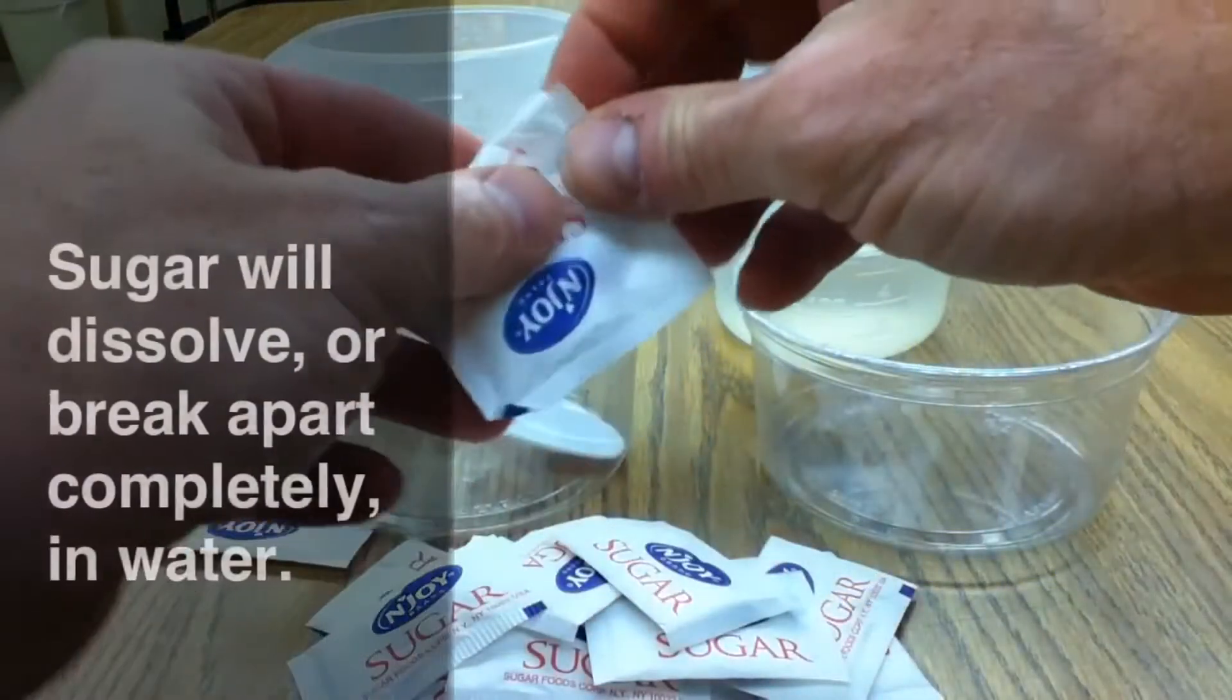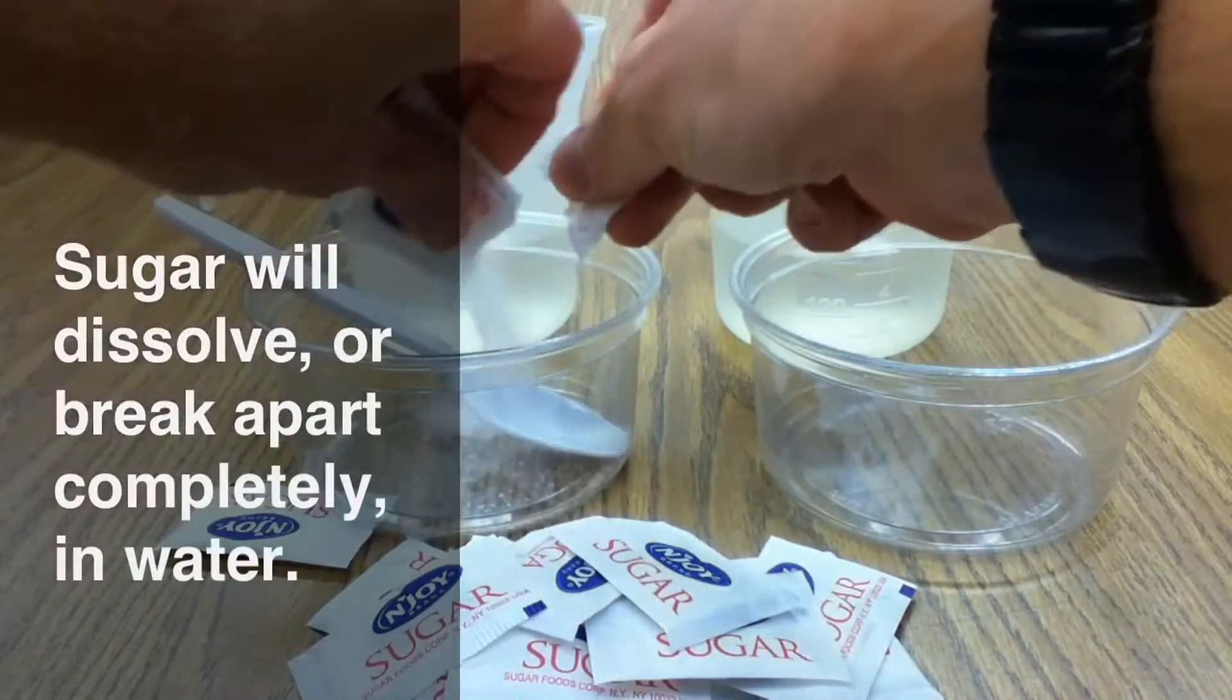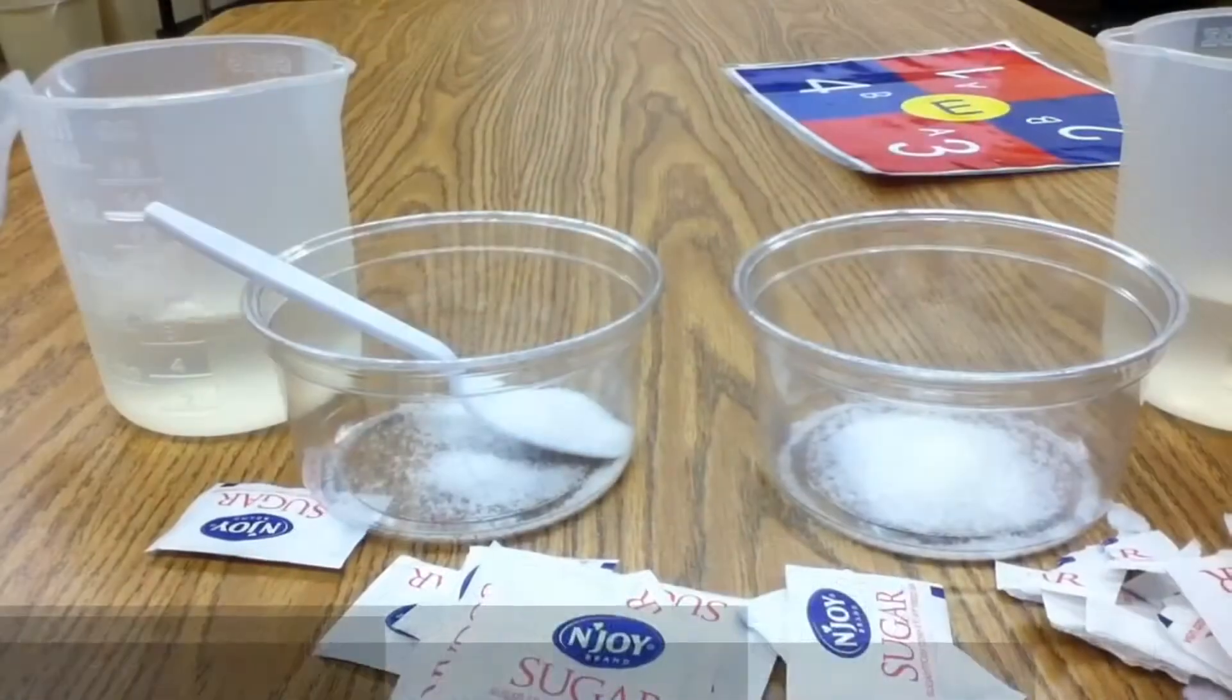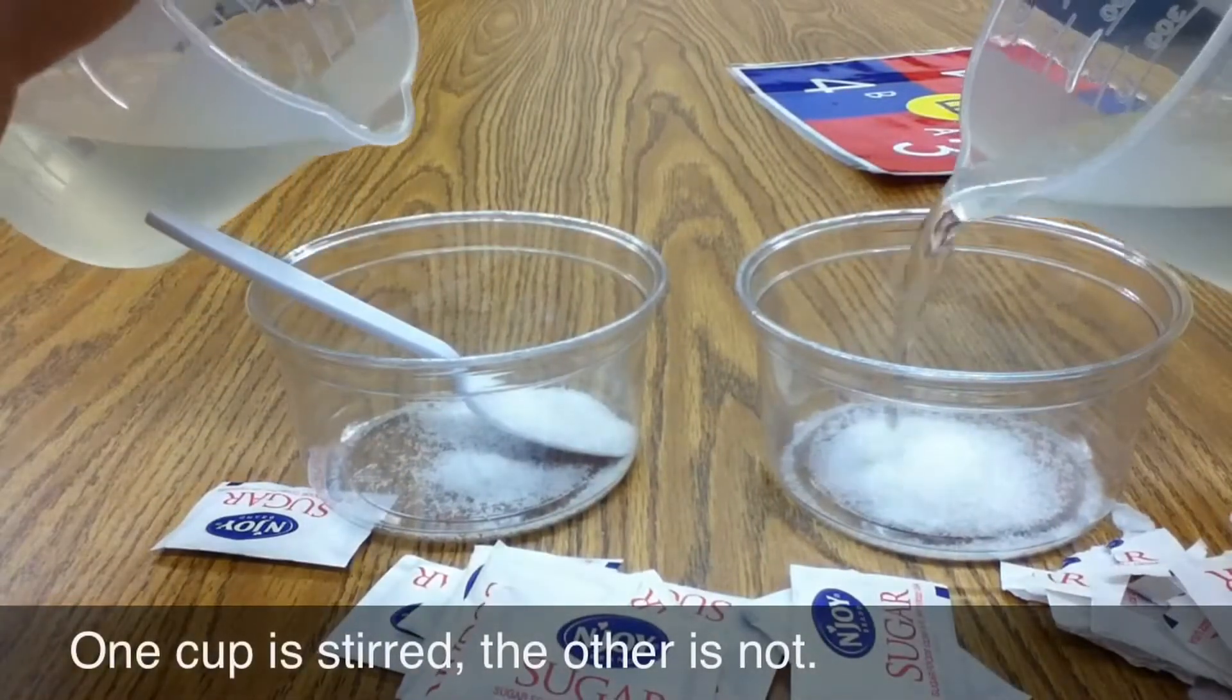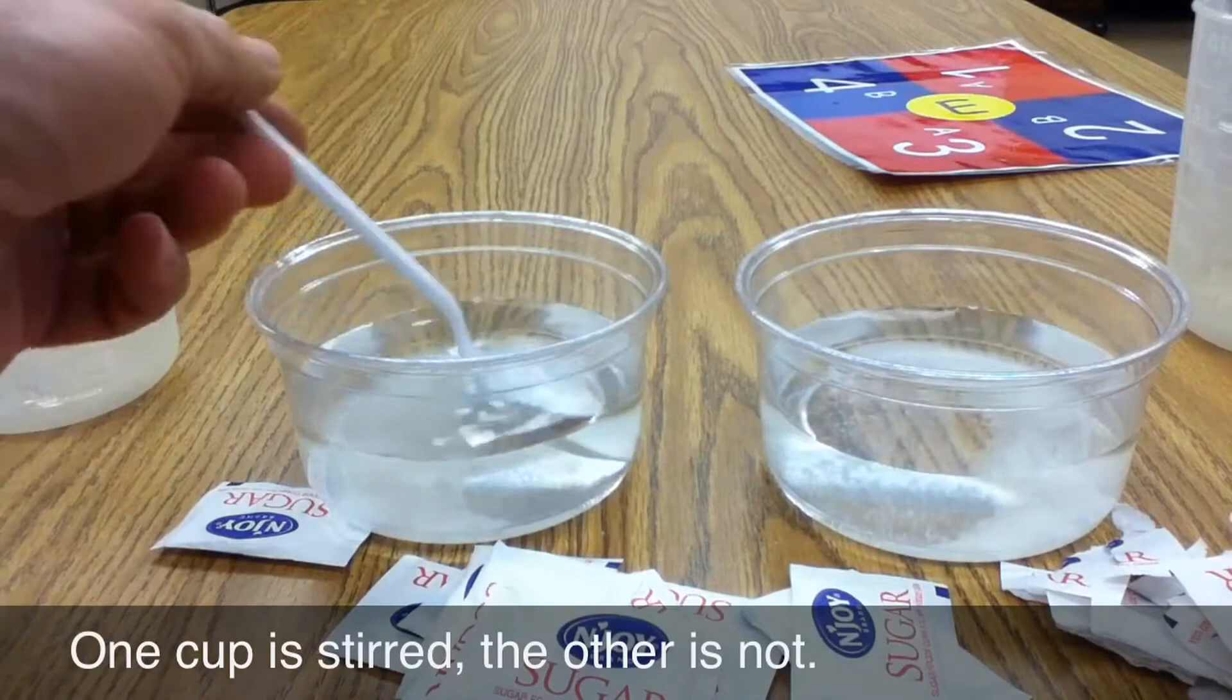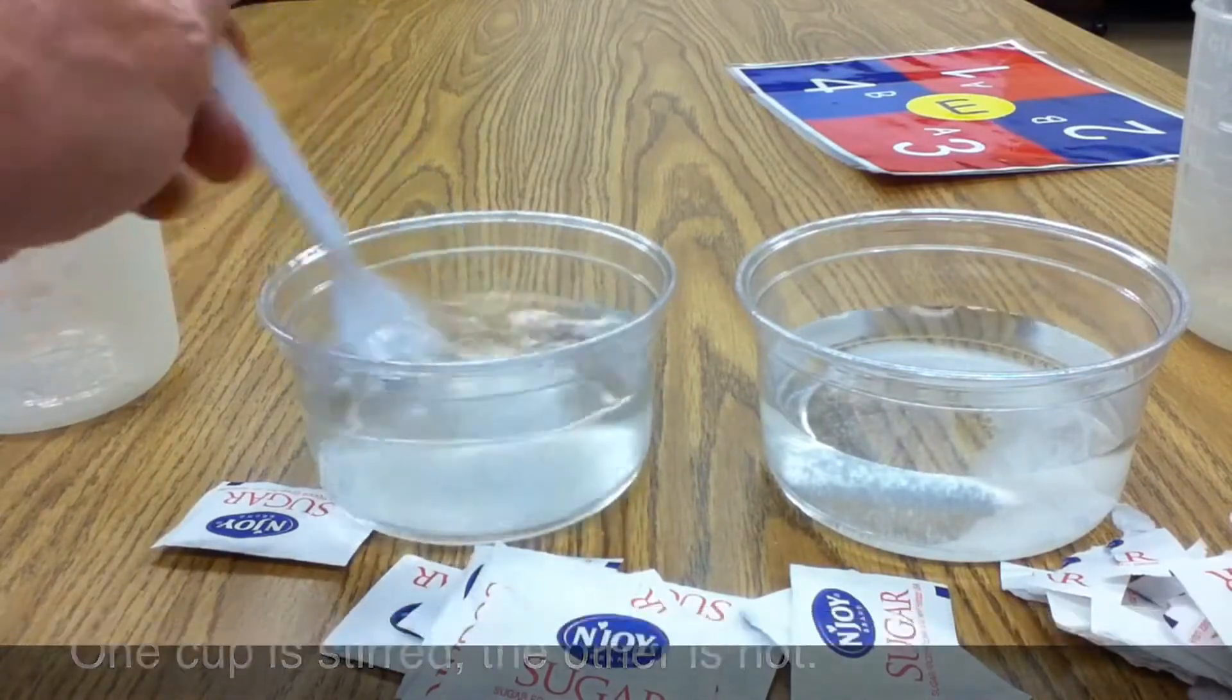In this investigation, we'll explore how sugar dissolves or breaks apart completely in water. Next I'm going to fill the cups with water. Before I stir the cup on the left, make a prediction or a hypothesis about what you think will happen to the sugar in the cup that I stir.